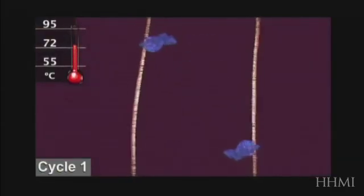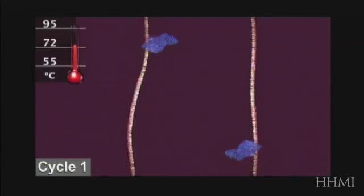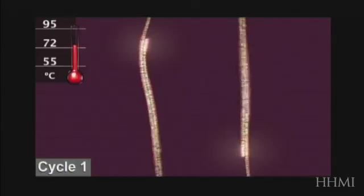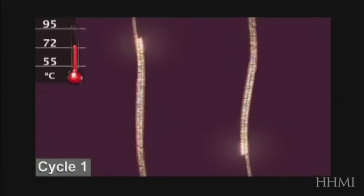At a slightly higher temperature, the enzyme TAC polymerase, shown here in blue, binds to the primed sequences and adds nucleotides to extend the second strand. This completes the first cycle.